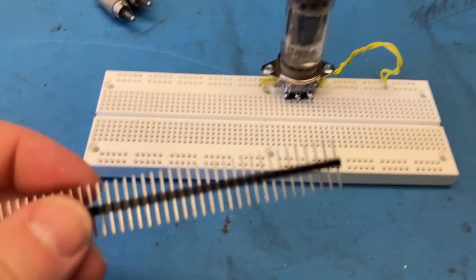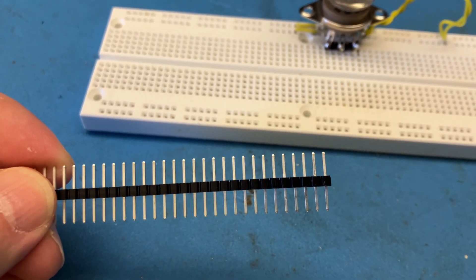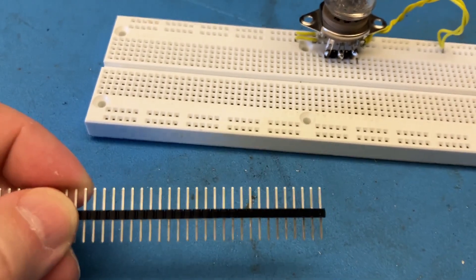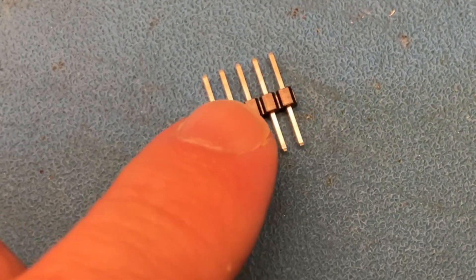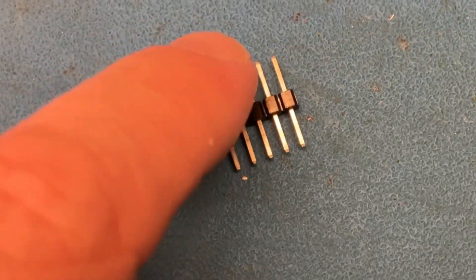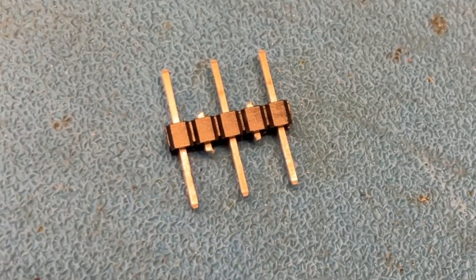And what I did is I took one of these double-sided header pins and I clipped off something with five of them. And then I'm going to clip off every other pin, so I'll have one, two, three pins left with wider spacing. So I got something like that.